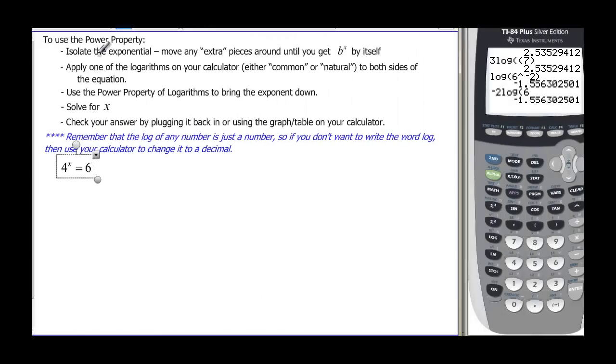So how do we use that? We want to isolate the exponential. So we want to get that base all by itself, and then move any extra pieces around so that we can get b to the x by itself. And then we want to apply one of our logarithms on our calculator, either the log or the natural log, to both sides. Then we can use that power property to solve for x. And then we can always check our answer by plugging it back in or using the calculator graph or table.